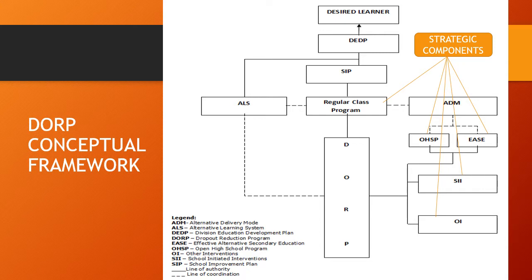Likewise, the EASE students are temporary leavers of the regular class program, and they re-enter the class after satisfactorily completing the modules given to them. Then the SII and OI are interventions given for the SARDO, or students at risk of dropping out. The students are members of the regular class program but participate in these two interventions to prevent them from dropping out.